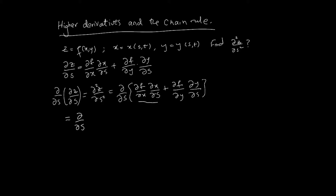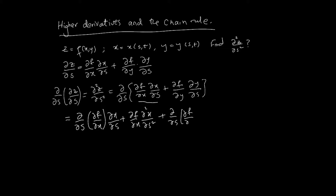So what that gives us is: (∂/∂s of fx) multiplied by xs, leaving xs alone because we're doing a product rule, plus fx times ∂²x/∂s². Then plus (∂/∂s of fy) multiplied by ys, product rule again, plus fy times ∂²y/∂s².